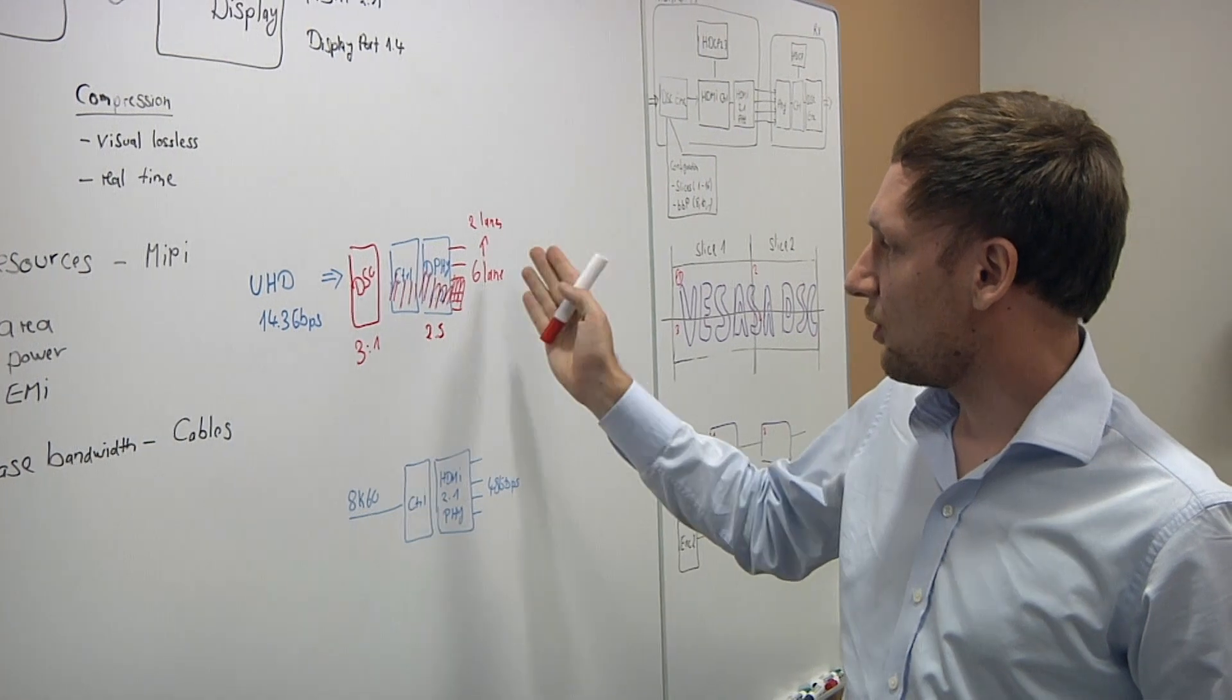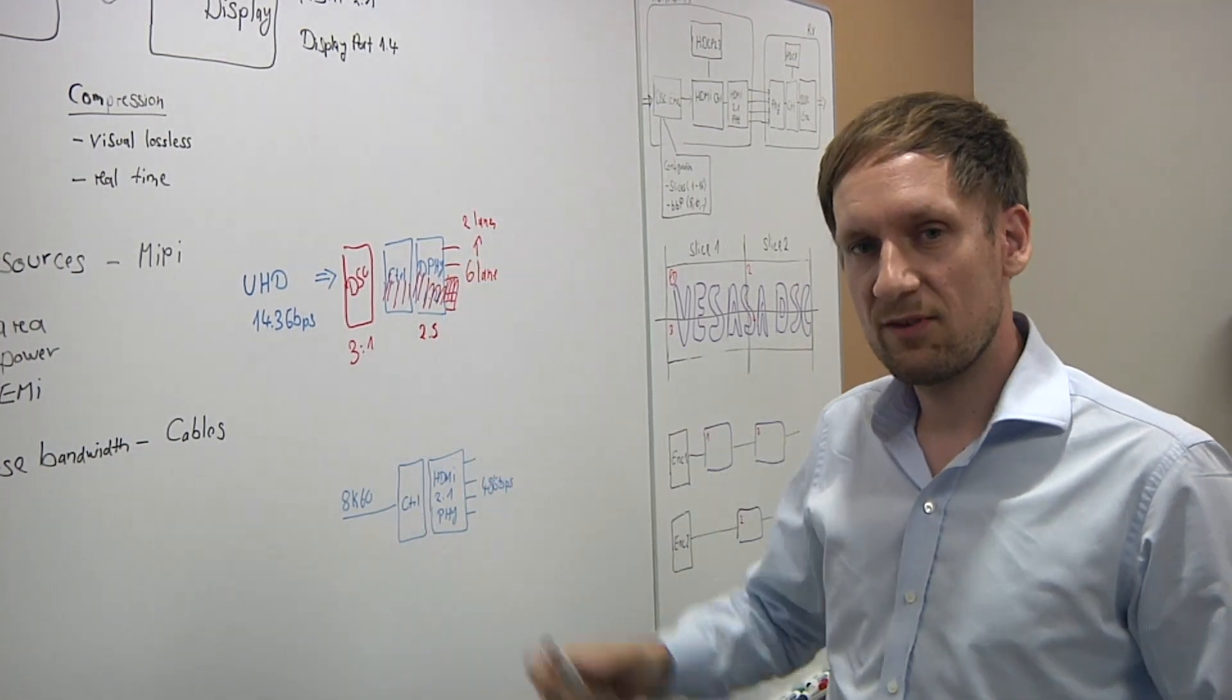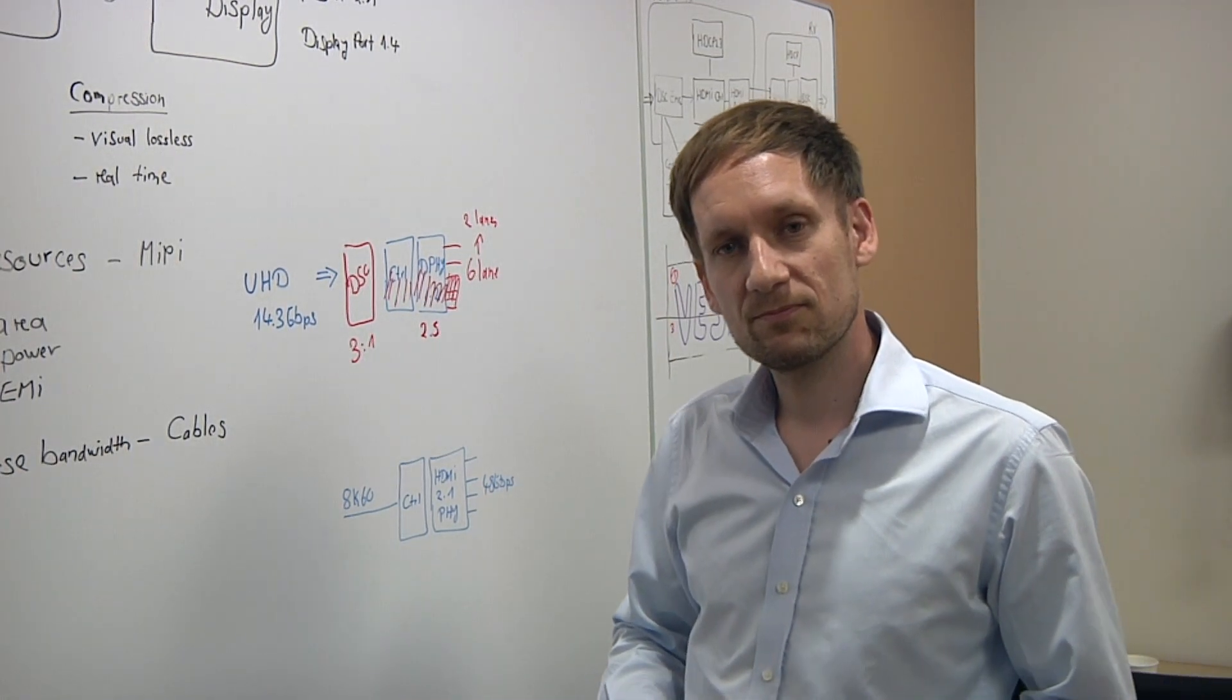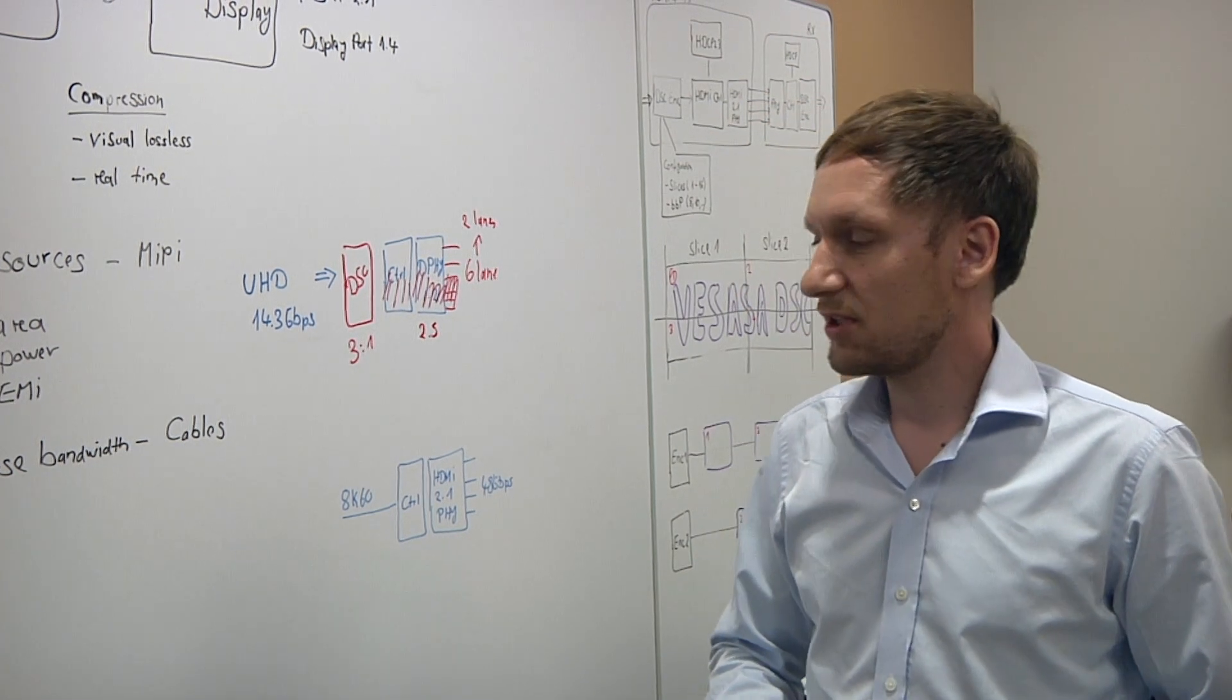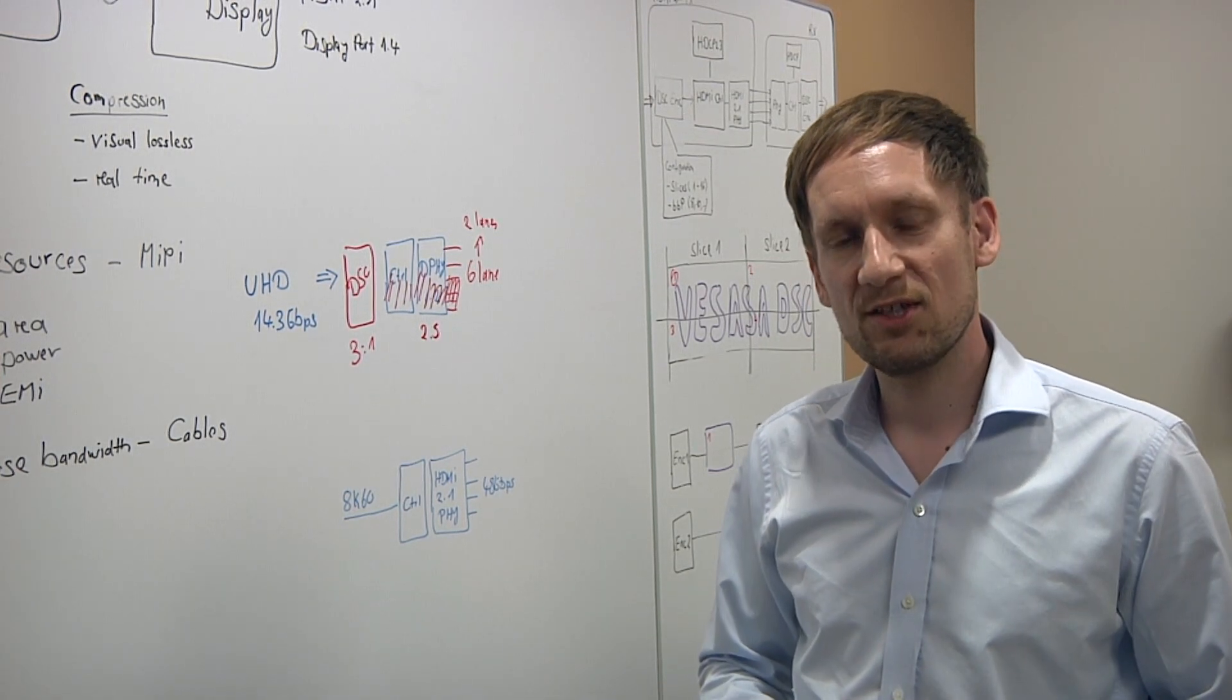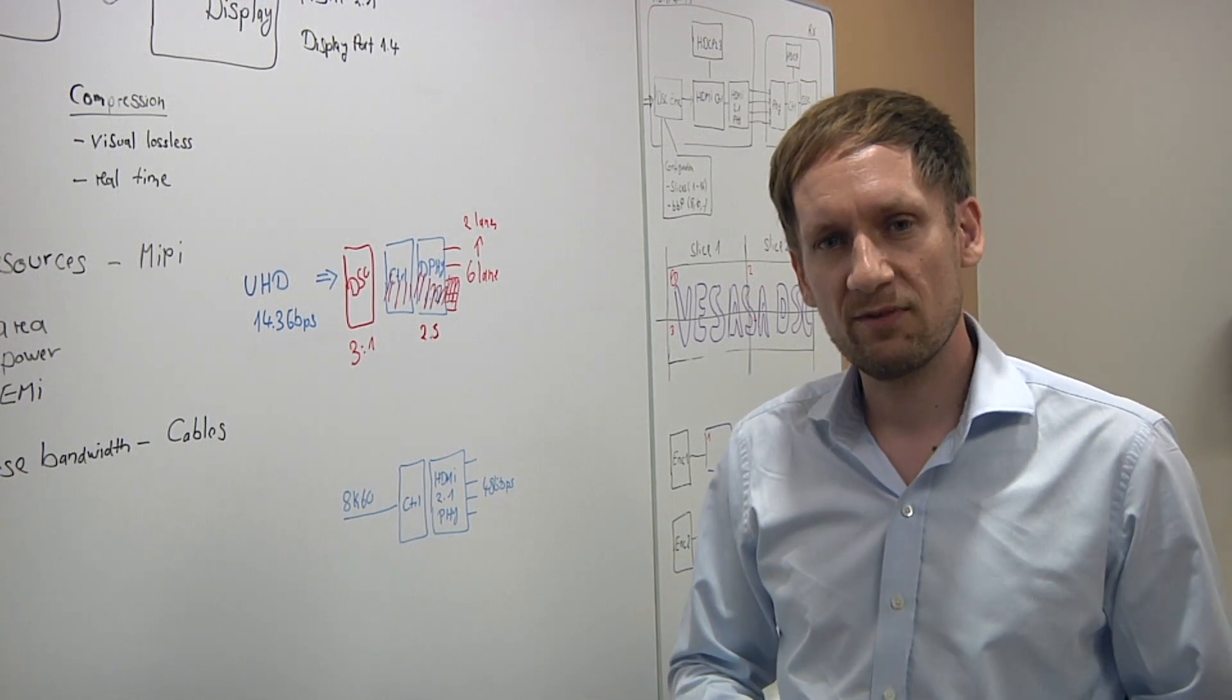This allows you to save significant area on your PHY and the controller logic for handling less PHY lanes. So overall the benefit of saving area also is directly related to saving power, which is more beneficial than adding the DSC block. And it also reduces heat along the way too because you have less logic working all the time. Exactly. Reducing heat or reducing EMI that comes through the additional lanes that you have on the chip. So these are all the benefits that you get and are very important for mobile devices.